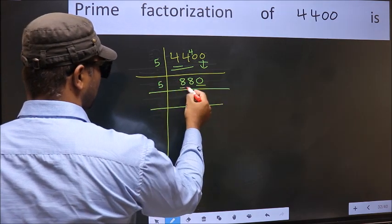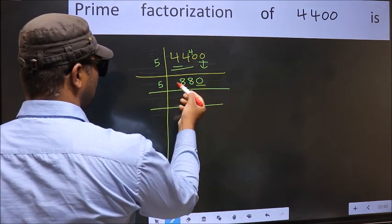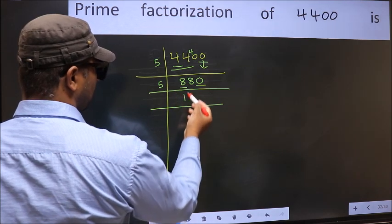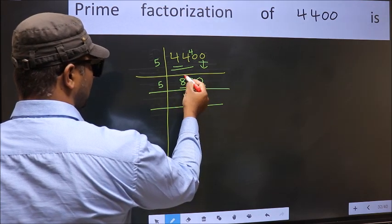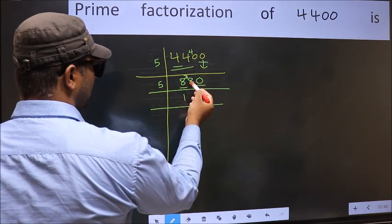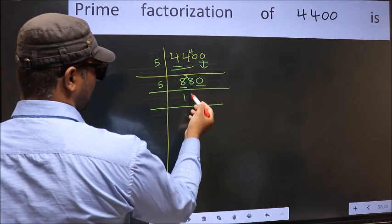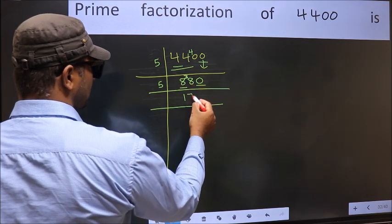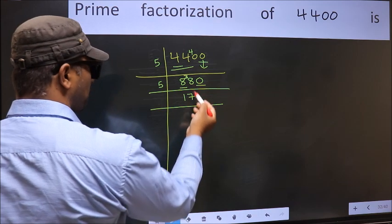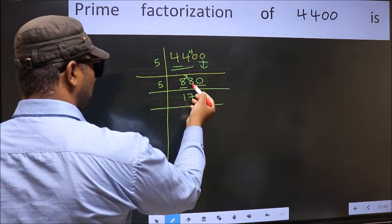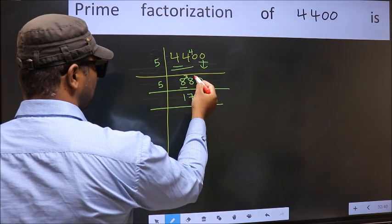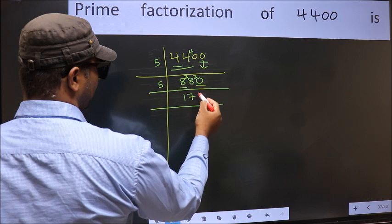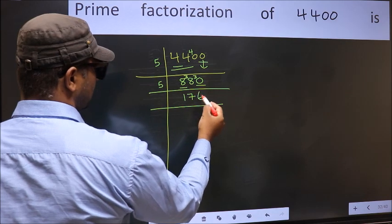Last digit is zero, so take 5 again. First number 8. A number close to 8 in the 5 table is 5 ones = 5. 8 minus 5 = 3, carried forward 38. A number close to 38 in the 5 table is 5 sevens = 35. 38 minus 35 = 3, carried forward 30. When do we get 30 in the 5 table? 5 sixes = 30.